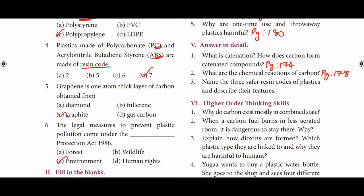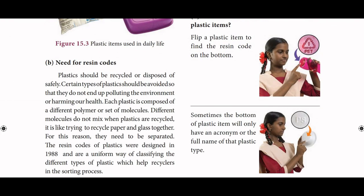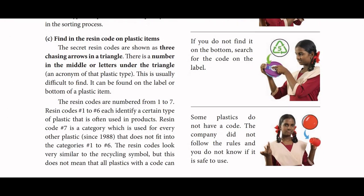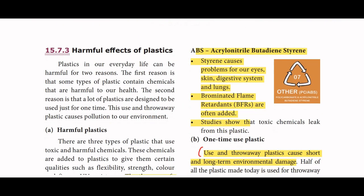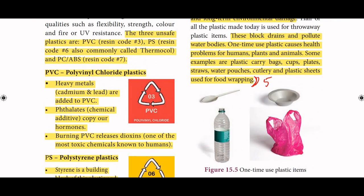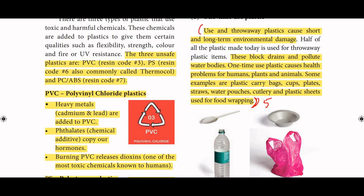Name the three unsafe resin codes of plastic and describe their features. The answer is on page number 180. The three unsafe plastics are: PVC with resin code 3, PS (commonly called thermocol) with resin code 6, and PC or ABS with resin code 7.